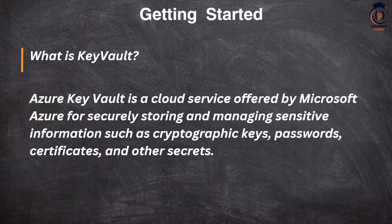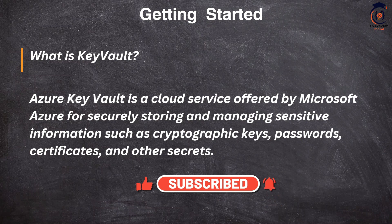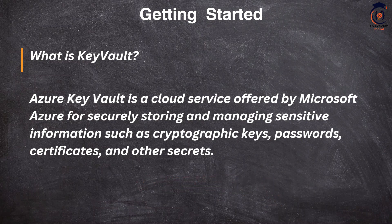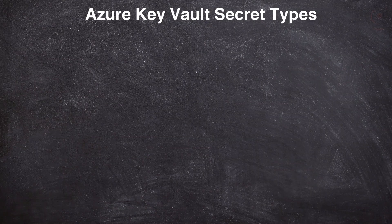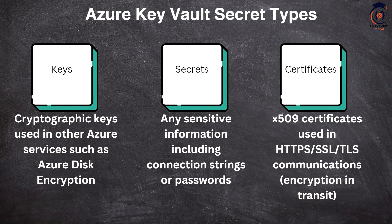A certificate is essentially signed encoded content that does the handshake between your domain and the site to establish a secure connection. Those kinds of certificates used for web applications can be stored in Azure Key Vault. So the three types in Azure Key Vault are: keys — cryptographic keys used to encrypt disks and storage; secrets — application secrets like connection strings and passwords you don't want to expose; and certificates — for communication encryption in transit.